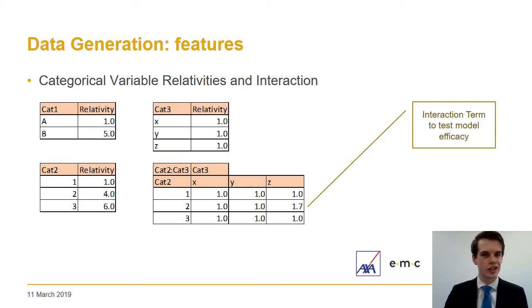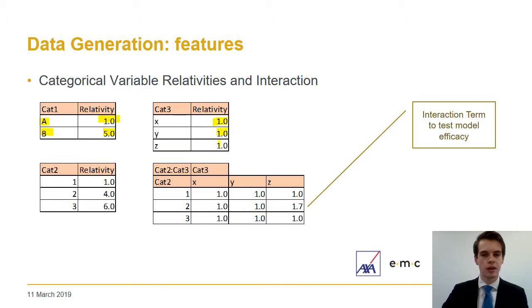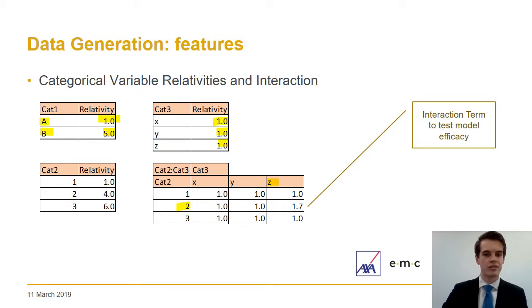Here is a brief breakdown of the categorical variables we've created and the relativities attaching to each. Our first variable, cat1, can take two values — A and B — with assigned relativities of 1 and 5. For cat3, our third variable, although it can take three values, the relativities assigned to each are the same, being one. We've also decided to add an interaction term: the interaction is between cat2 taking the value of 2 and cat3 taking the value of Z, with an interaction term of 1.7.